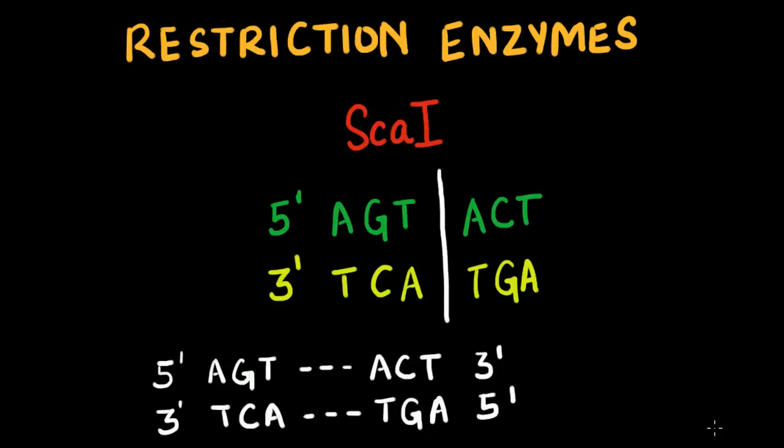Blunt ended molecules are molecules that terminate in base pairs. And this is not always desirable in molecular biology as when using a DNA ligase molecule to attach two molecules into one, the yield is often significantly low. Also, while using restriction enzymes in cloning processes, blunt ends sometimes result in the inserted DNA being oriented in the opposite direction, which is undesirable.